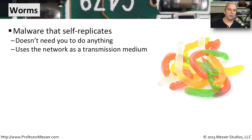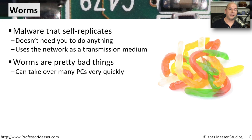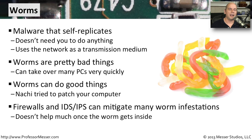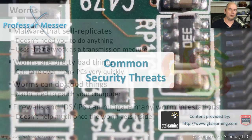Another nasty type of malware is a worm. A worm can replicate itself without any type of user intervention — it doesn't need you to run a program and can take care of that process on its own. Because of that, it can hop around the network very quickly and infect a large number of computers in a very short period of time. There was even a worm called Nachi that tried to patch computers across the internet to avoid another worm. We can sometimes stop worms at the edge of the network using intrusion detection or intrusion prevention products, but once a worm gets inside the network, there's nothing to stop it.